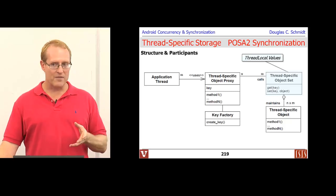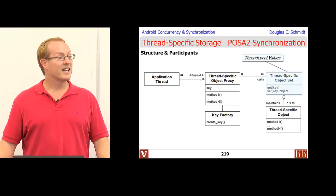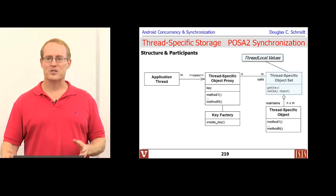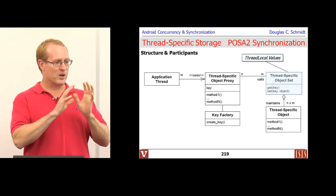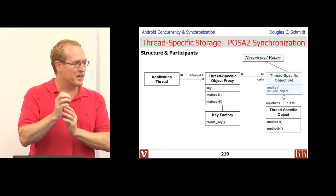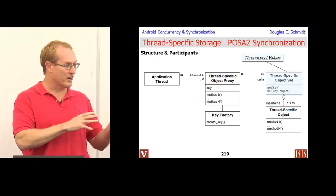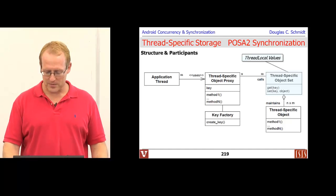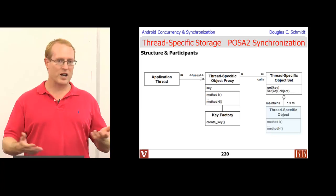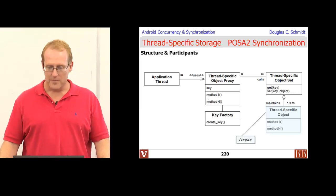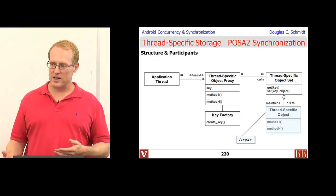The key workhorse is the thread-specific object set — a map or data structure that takes a key and returns a pointer to a thread-specific object. In Android and Java, this is thread-local.values. Unlike the registry approach shared by all threads requiring locking, the thread-specific object set is logically or physically local to each thread — each thread has its own map. The last piece is the thread-specific object itself — the actual thing stored in thread-specific storage, in our case the looper.